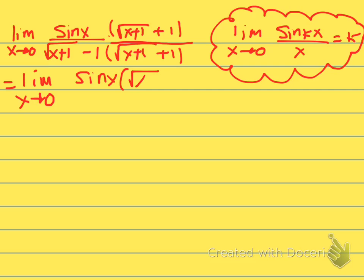So square root of X plus 1 plus 1, and then the bottom we use the conjugate, so a squared minus b squared. That ends up being X plus 1 and then minus 1 squared, or 1 squared minus 1.